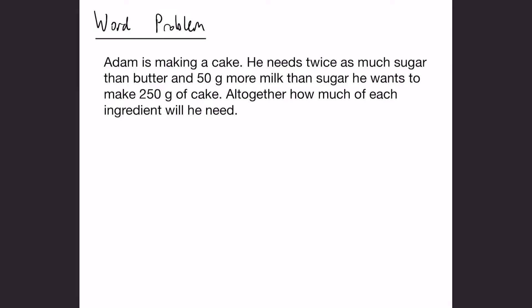So you always want to start off by identifying what is the smallest value. In this example we are going to be looking at which ingredient is used the least. So you can see here, he needs twice as much sugar as butter. So he needs more sugar than the butter and even more milk than the sugar. So the butter must be our lowest one.